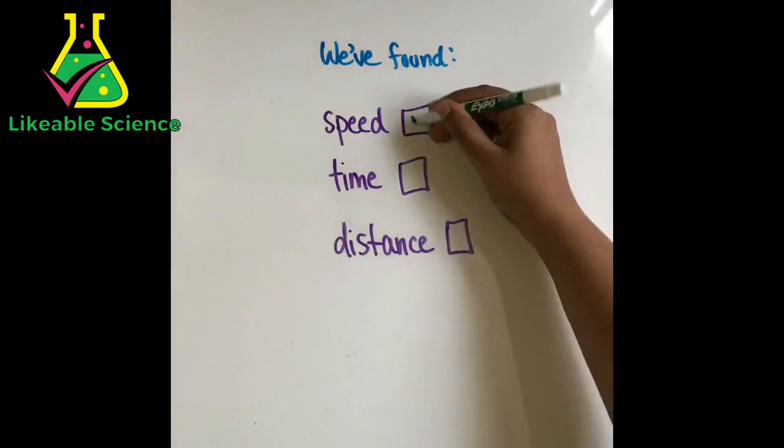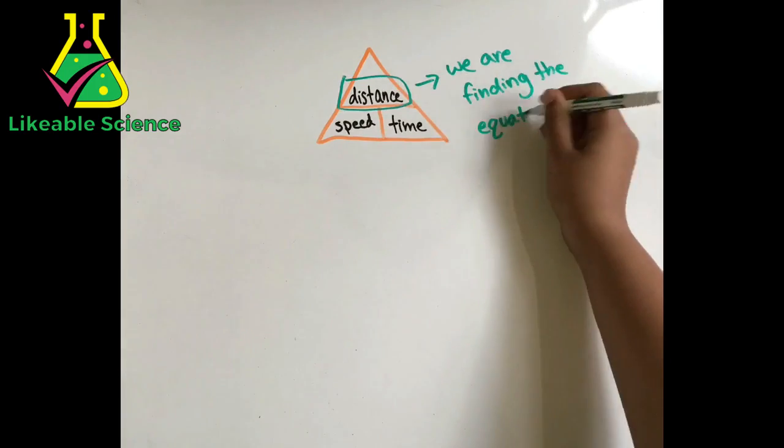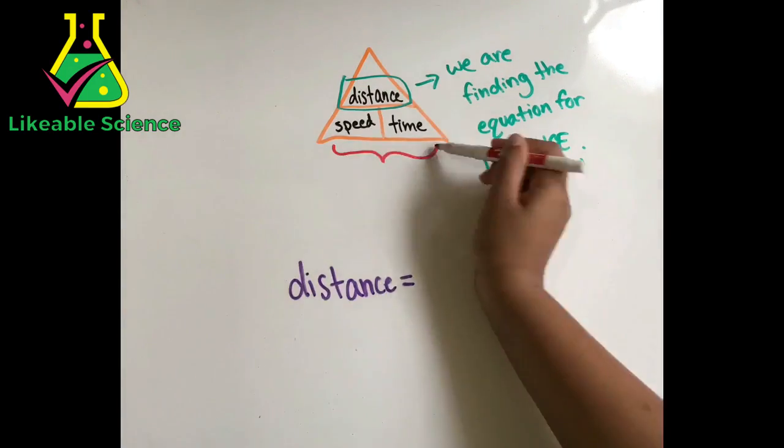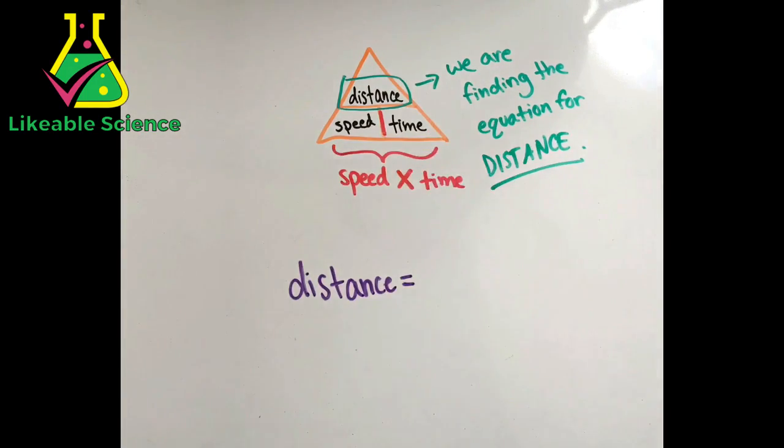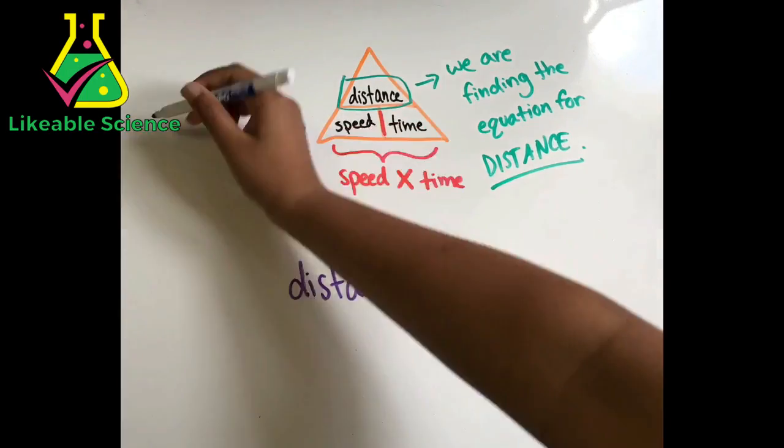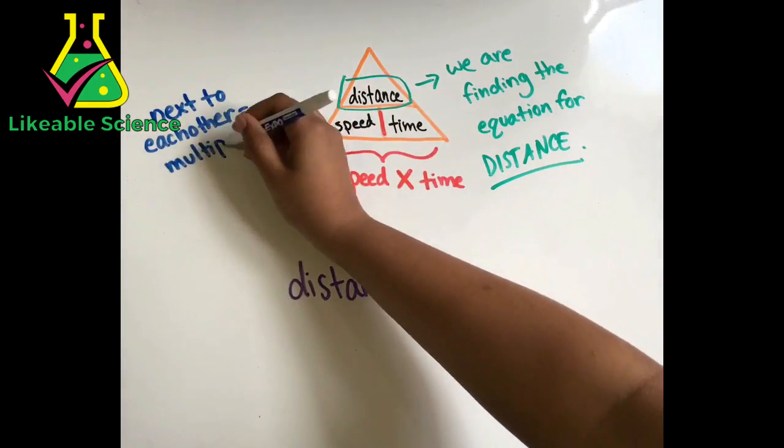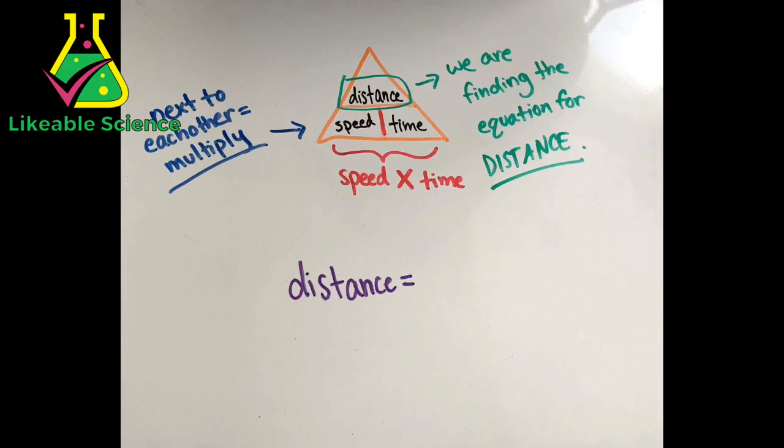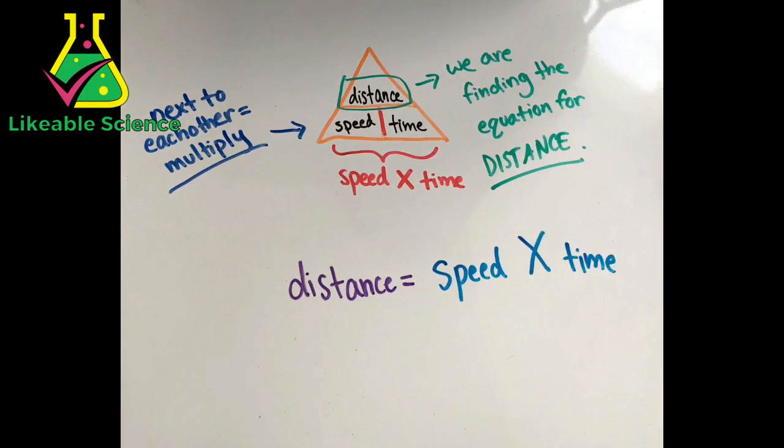We found speed and time, but now we have to solve for distance. Let's start with the first half of our equation: distance equals. We can now cross out distance from the triangle and the only two words left are speed and time. Since speed and time are right next to each other, we are going to multiply them. Speed and time would now become speed multiplied by time, and our new equation would be distance equals speed multiplied by time.